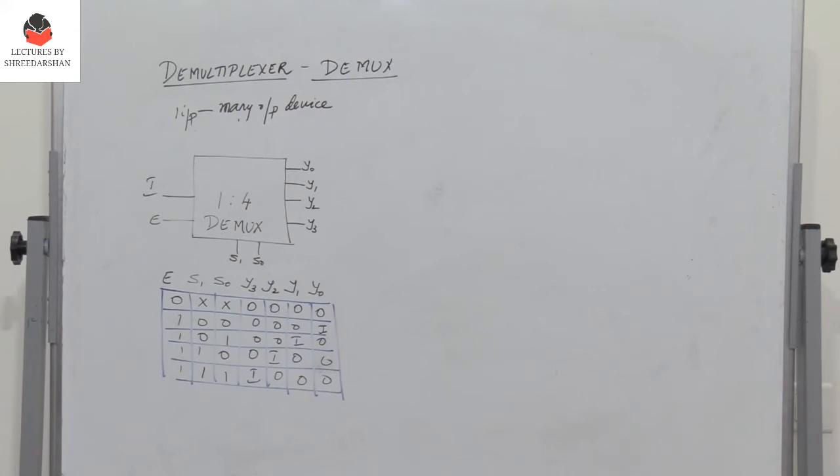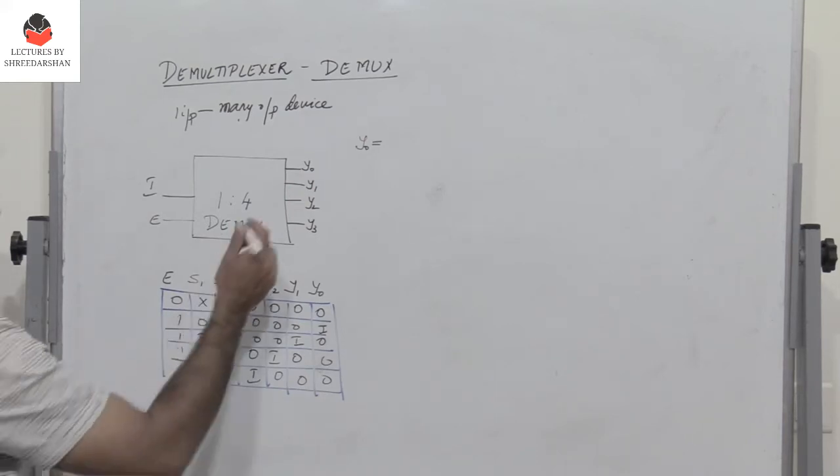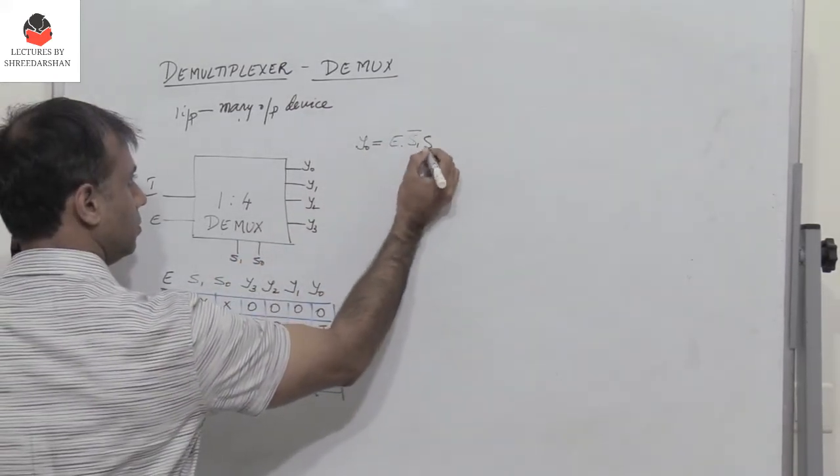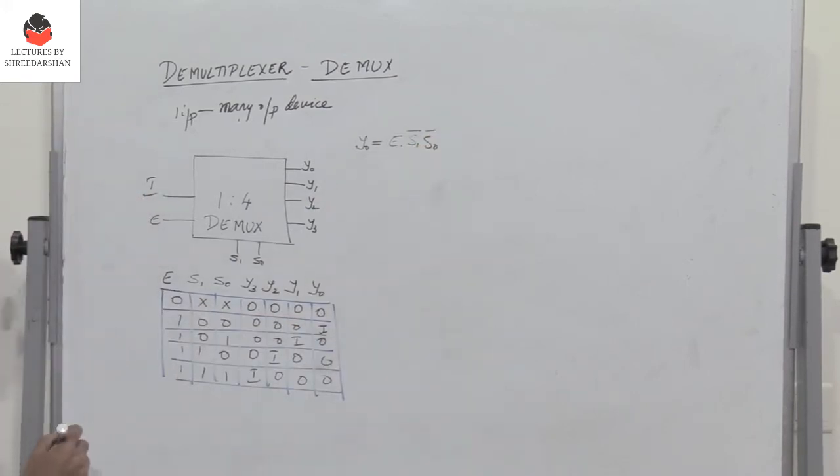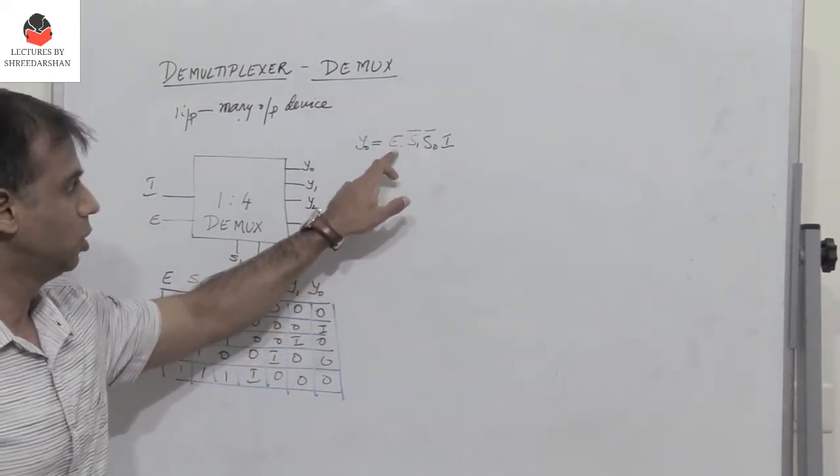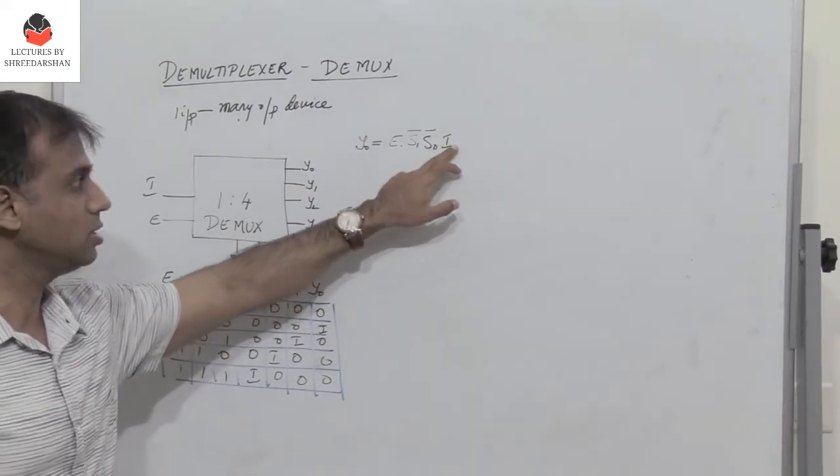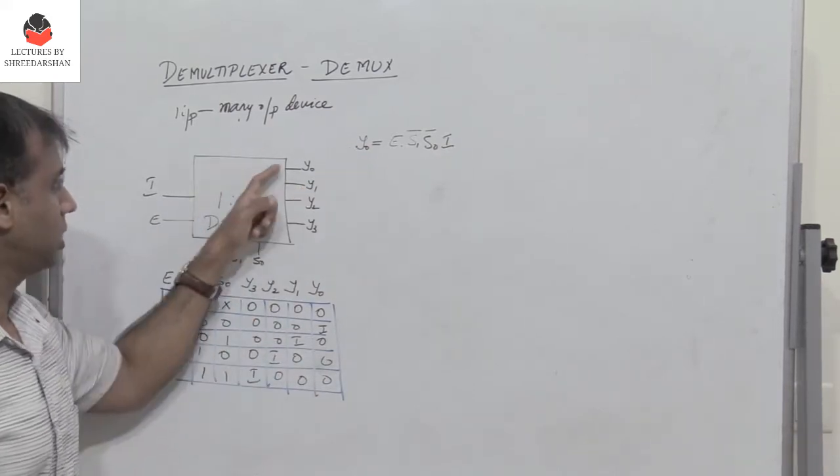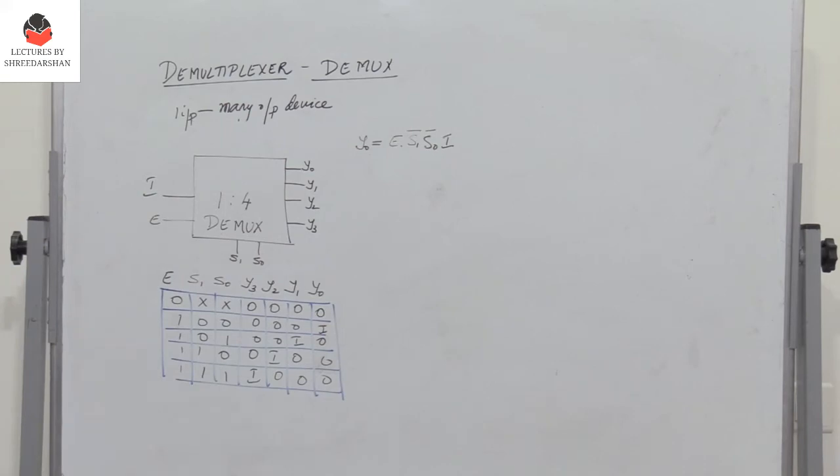So it's a very simple design, a very simple truth table. So let us see how we can design this. So what is y0? Y0 is enable e being 1, e into both of them are 0, so I have s1 bar, s0 bar, into the input i. So enable is 1, both s1 and s0 are 0, their complements are 1, so it is 1 into i. So if i is 0, y0 is 0. If i is 1, y0 is 1. So the input is connected to the first output y0.